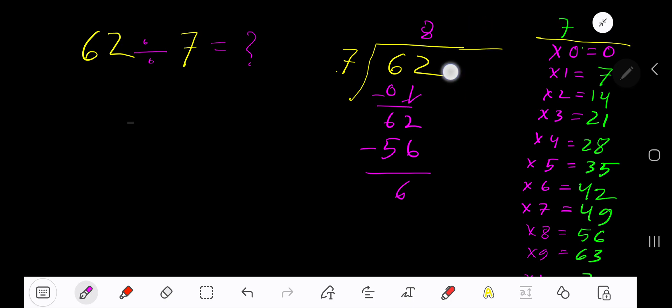Bring down the first zero. Before the zero there is a decimal, decimal must come to the quotient directly. 7 goes into 60 how many times?